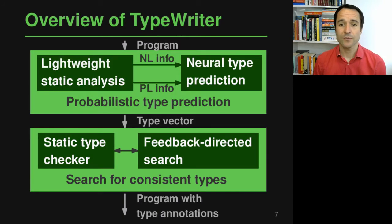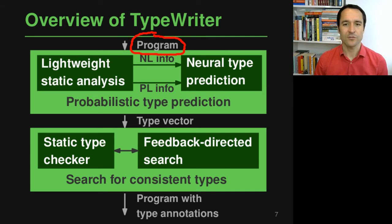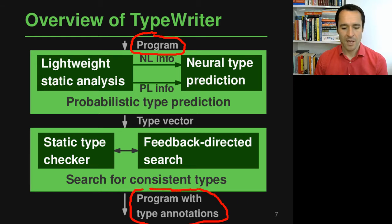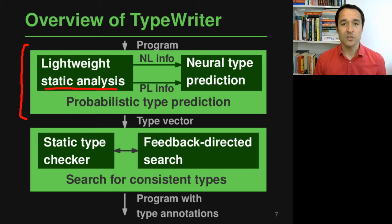The approach I want to describe is called TypeWriter, because it's basically writing the types into your code. TypeWriter consists of two big components. The overall input is a program — for training we need many programs, but once trained you pass one program — and the output is the same program with type annotations added. The first step is a probabilistic model that predicts missing types based on a lightweight static analysis that extracts information from the code, which is then used in a neural network to do the actual type prediction.